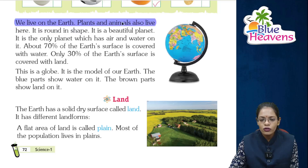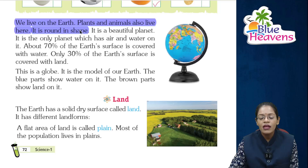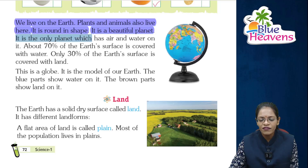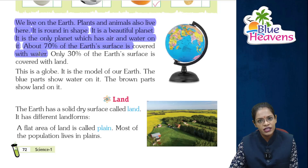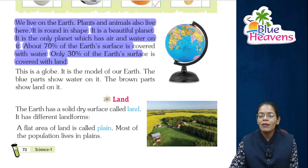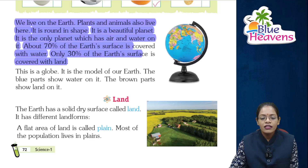We live on the Earth. Plants and animals also live here. Our Earth's shape is round. It is a beautiful planet. It is the only planet which has air and water on it. About 70% of the Earth's surface is covered with water. Only 30% of the Earth's surface is covered with land.